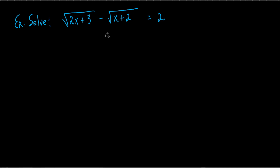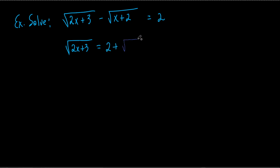With two square roots, what I would do is move the minus square root of x plus 2 to the other side — it just works out a lot easier. So I take the square root of 2x plus 3 equals 2 plus square root of x plus 2. That 2 was there originally. I just added the square root of x plus 2 to both sides and put it on the right.